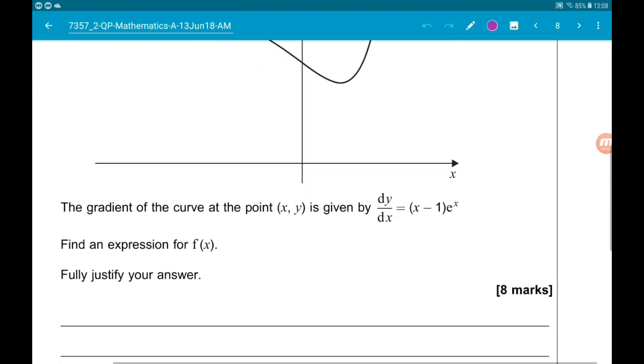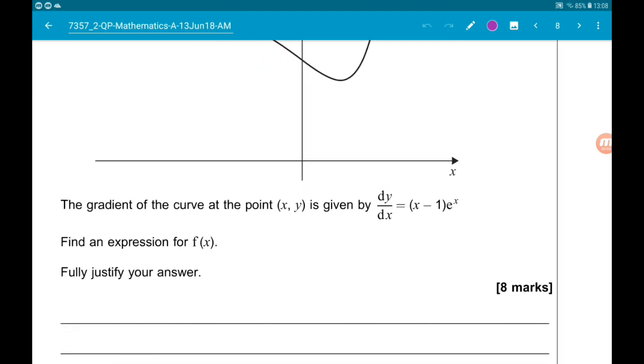We're told the gradient of the curve at the point x, y is given by dy by dx is equal to x minus one e to the x. We want to find an expression for f of x. Fully justify your answer.